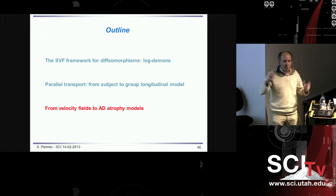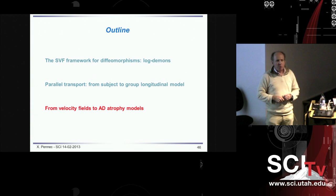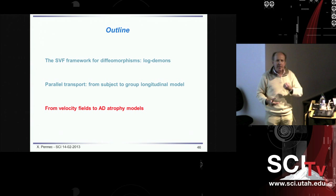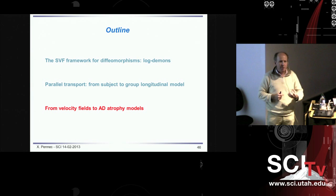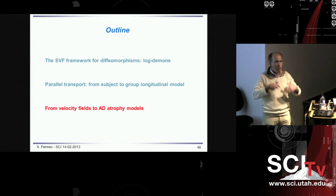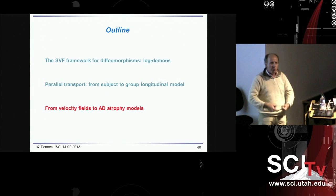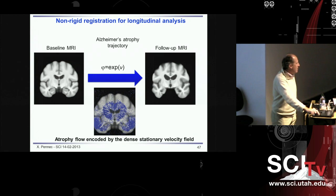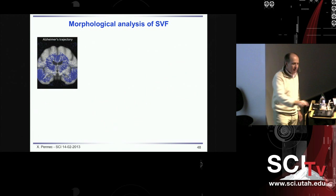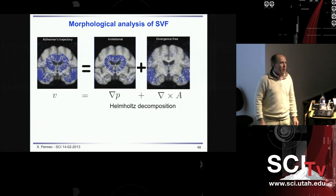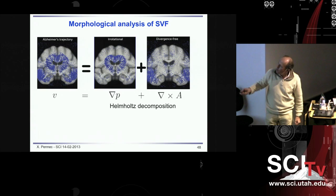We have a way to compute mean trajectories. We would like to go to the interpretation: what's happening, where are the regions which change, where is the atrophy? The second question is: can we extract reproducible measures — not just multivariate measures for discovery, but if we want a biomarker, we need a reproducible way to measure. One idea: since our stationary velocity field is a velocity field, we can decompose it using Helmholtz decomposition — the gradient of a scalar function giving the irrotational component, plus a divergence-free component giving the rotational part. The irrotational part encodes all the volume changes. In Alzheimer's, we are thinking about where the atrophy is — we can focus on this part.